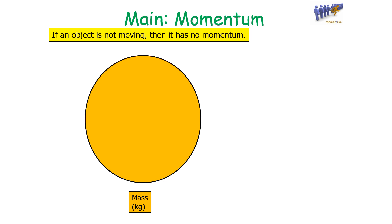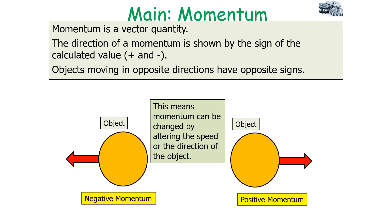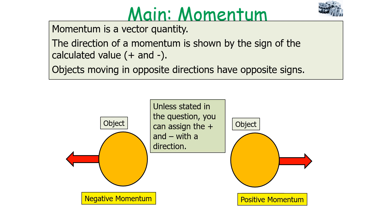If an object is not moving, it has no momentum. Momentum is a dynamic quantity — every object in motion has a non-zero momentum, but only an object with a velocity of zero has no momentum. Momentum is a vector quantity, so its direction is shown by the sign of the calculated value (plus or minus), and objects moving in opposite directions will have opposite signs. Momentum can be changed by altering the speed or the direction of travel. Unless stated, you can assign which direction is positive and which is negative.